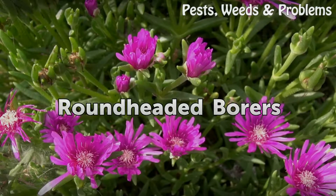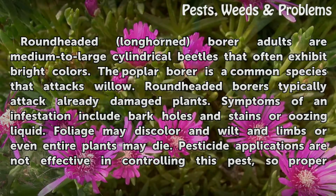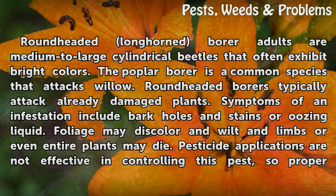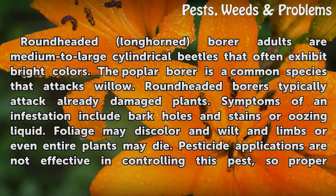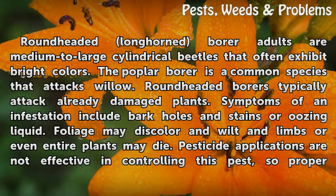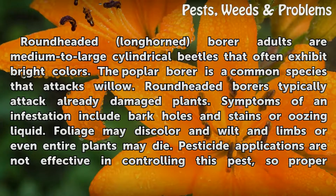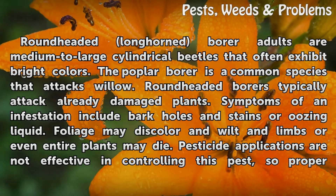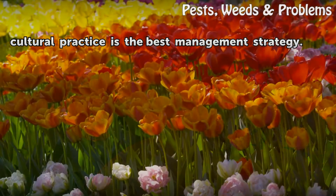Round-headed longhorn borer adults are medium to large cylindrical beetles that often exhibit bright colors. The poplar borer is a common species that attacks willow. Round-headed borers typically attack already damaged plants. Symptoms of an infestation include bark holes and stains or oozing liquid. Foliage may discolor and wilting limbs or even entire plants may die. Pesticide applications are not effective in controlling this pest, so proper cultural practice is the best management strategy.